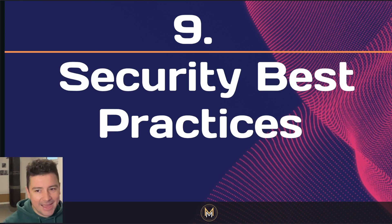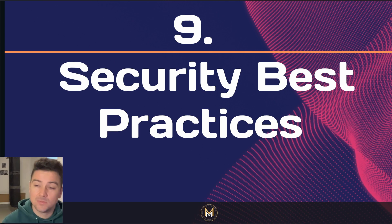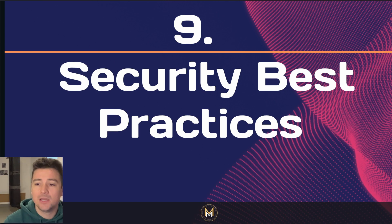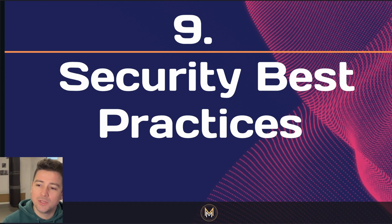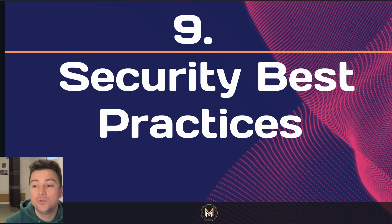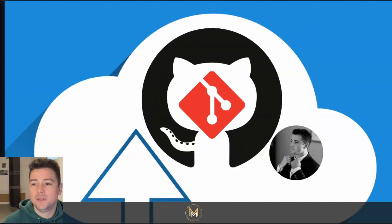Number nine is security best practices. Prioritize security by regularly updating dependencies, conducting security audits, and following secure coding practices. Enable automated security vulnerability scanning for your repository to identify and address potential security threats proactively.